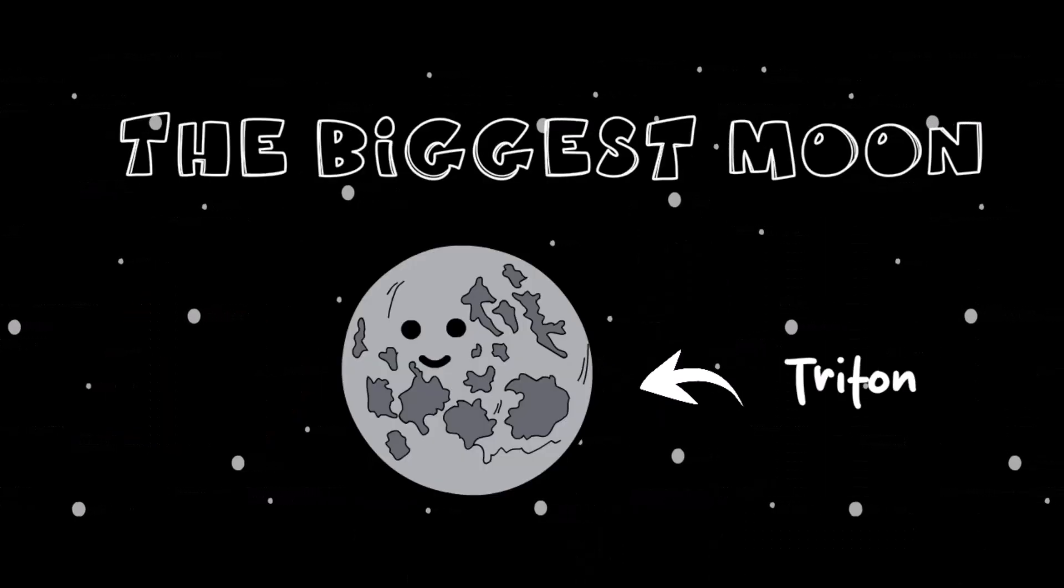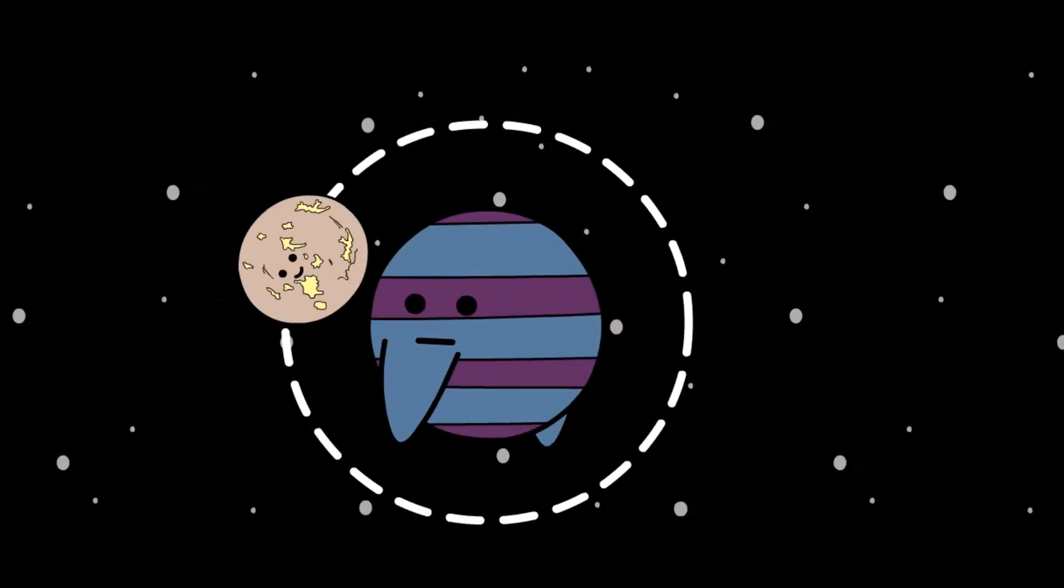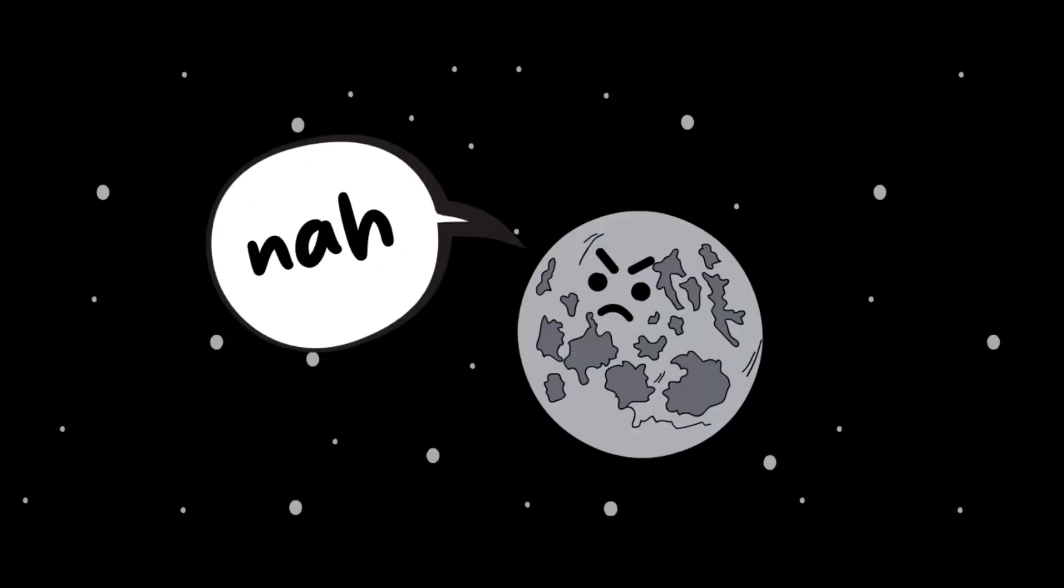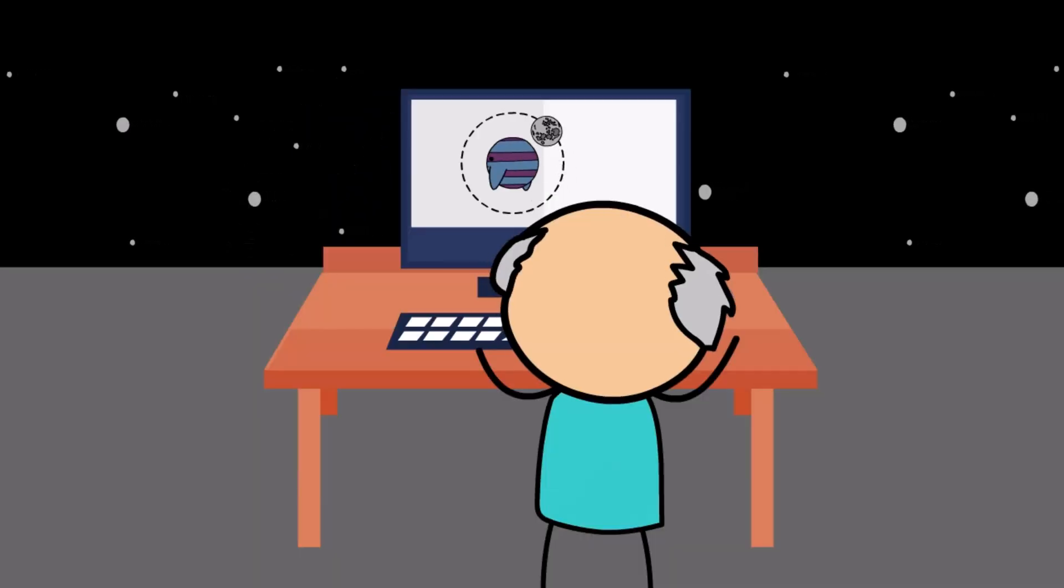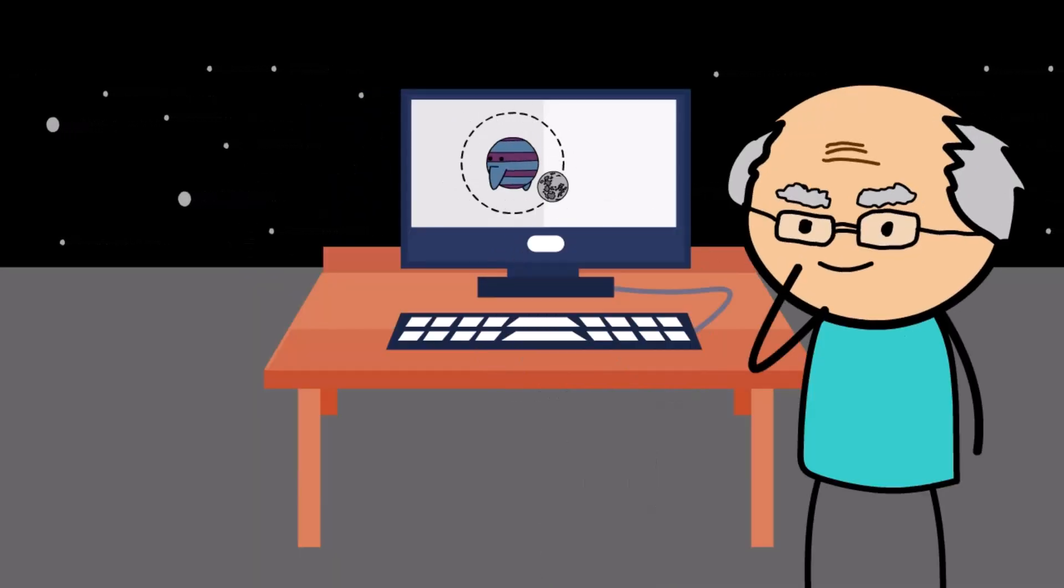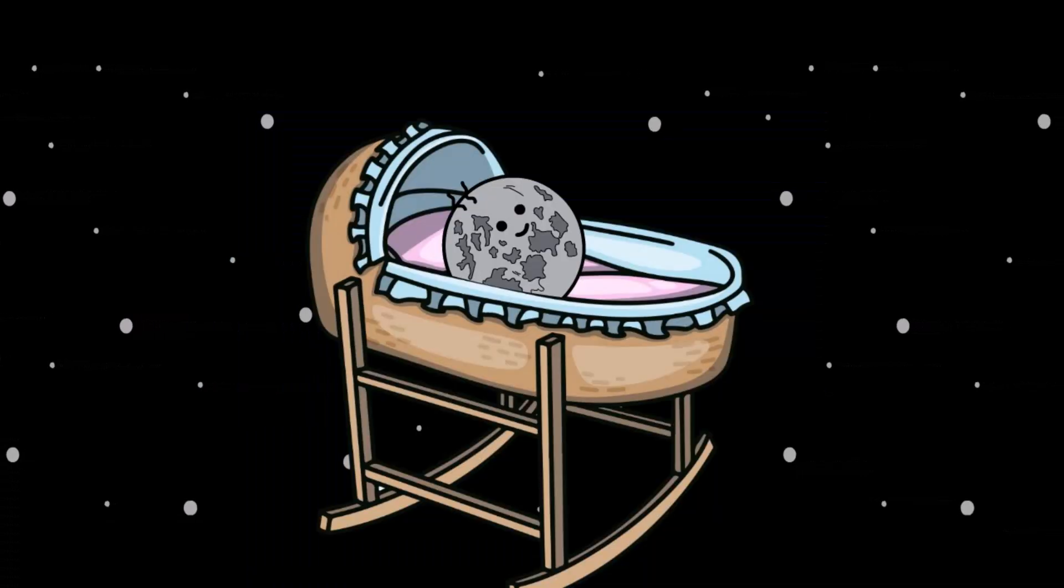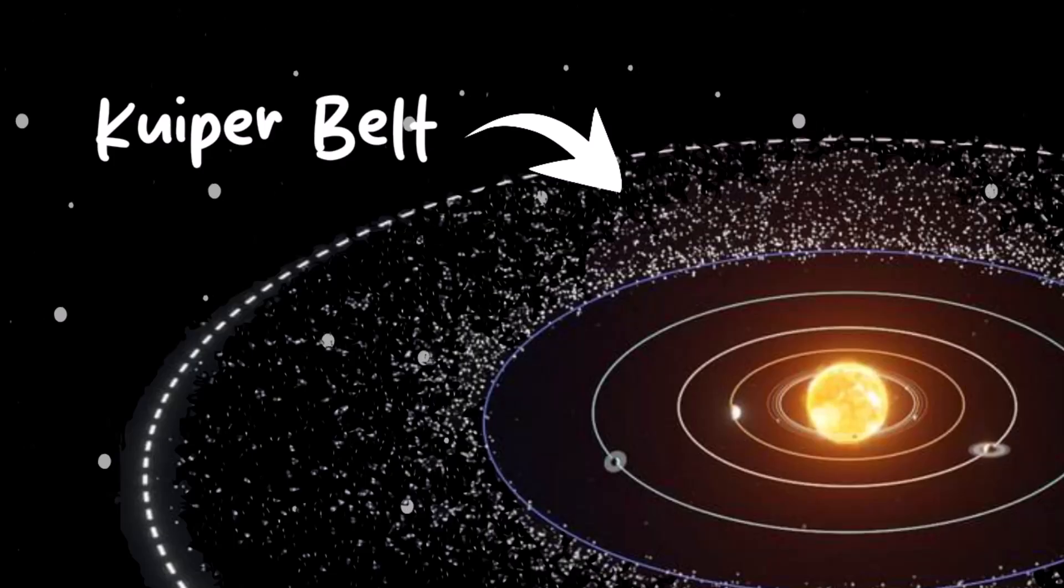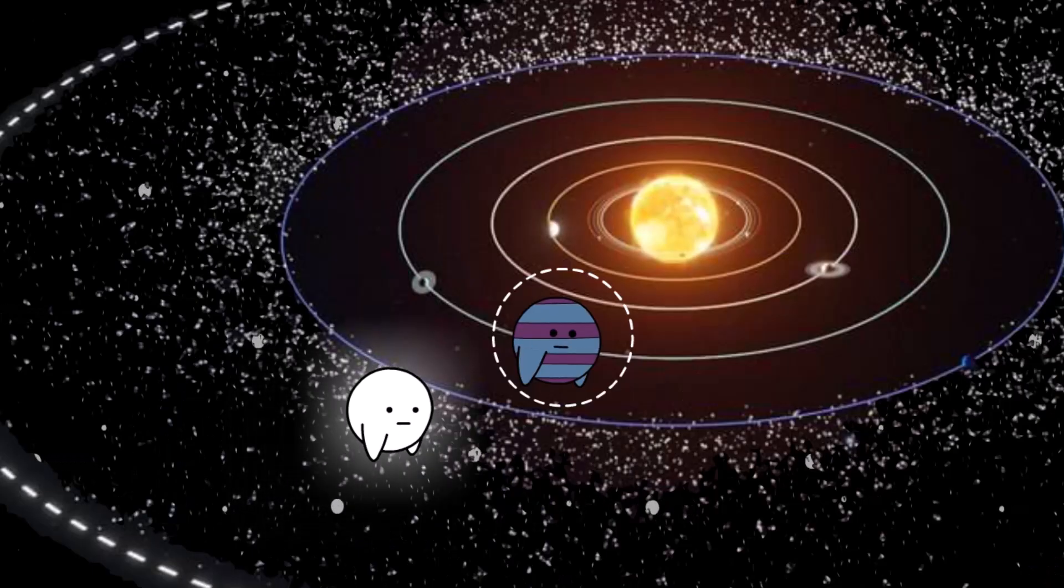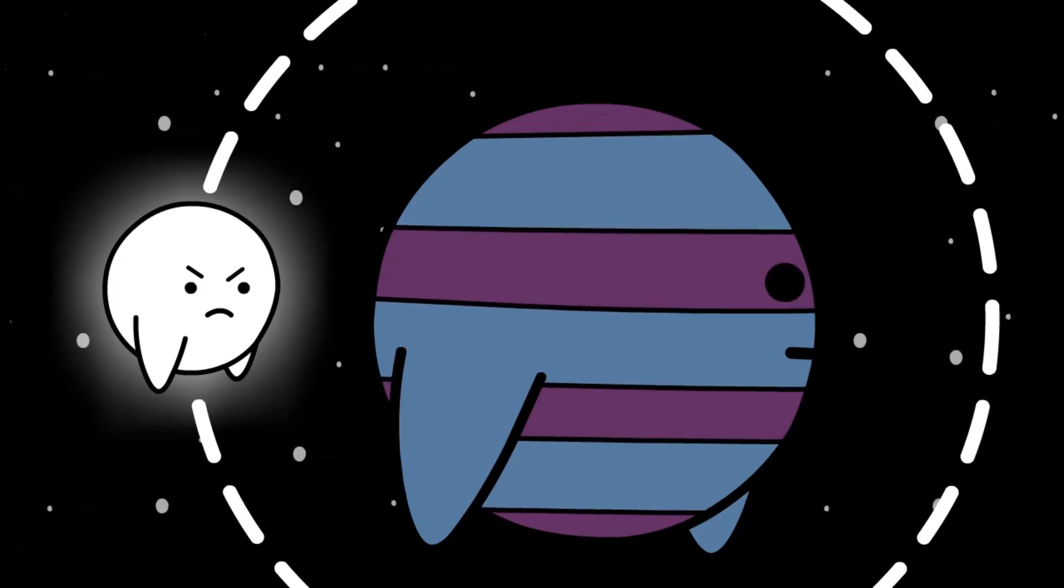The biggest moon, Triton, is the definition of doing its own thing. While most moons orbit in the same direction their planet spins, Triton went the opposite way. It orbits backward. That backward motion tells scientists something big. Triton probably wasn't born around Neptune at all. Most likely, it used to be a dwarf planet from the Kuiper Belt until Neptune's gravity pulled it in and made it stay. Kind of like adopting a wild teenager and hoping for the best.